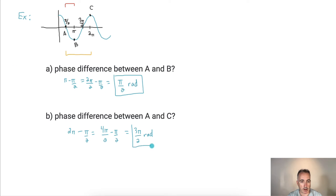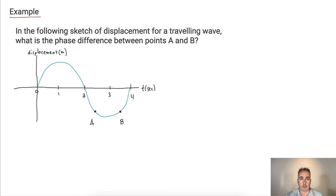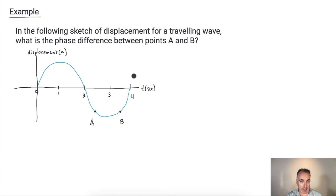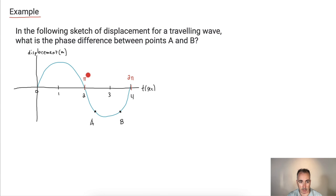We're not caring so much about if one is forward or backwards — we just care about the actual distance in between them. This time we've got a sketch of displacement for a traveling wave. We're asking for the phase difference between points A and B. Remember, we do the same thing as before — for phase difference, we go into the land of π over 2s. So I'm going to label this: instead of 4, I'm going to call this 2π. Halfway must be π, and half of that is π over 2. Then 1π over 2, 2π over 2 — this must be 3π over 2.